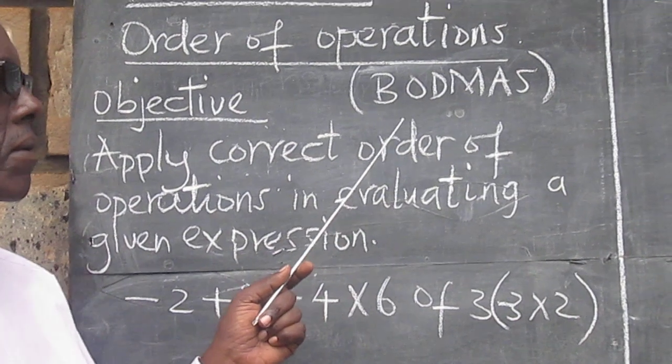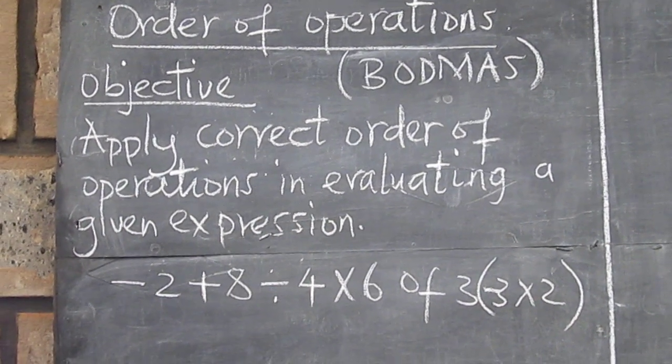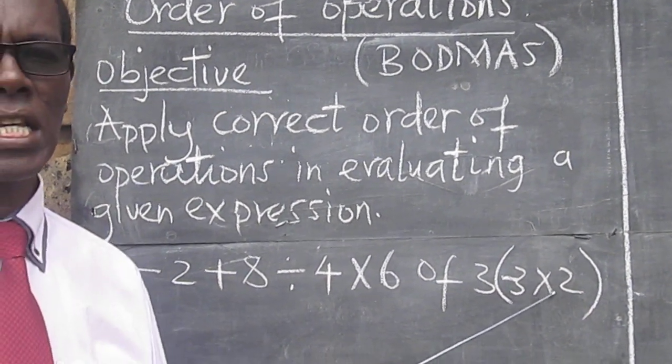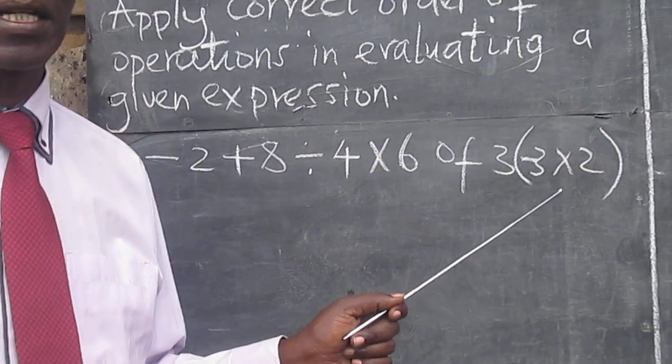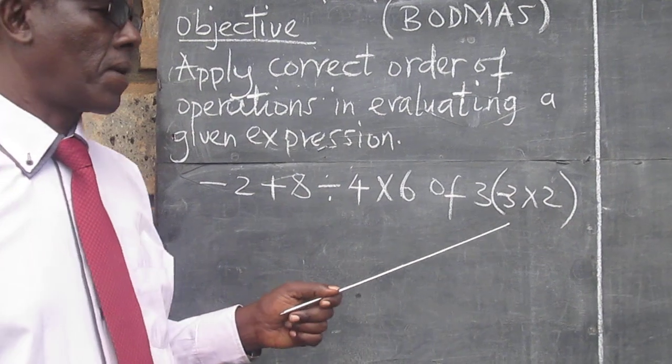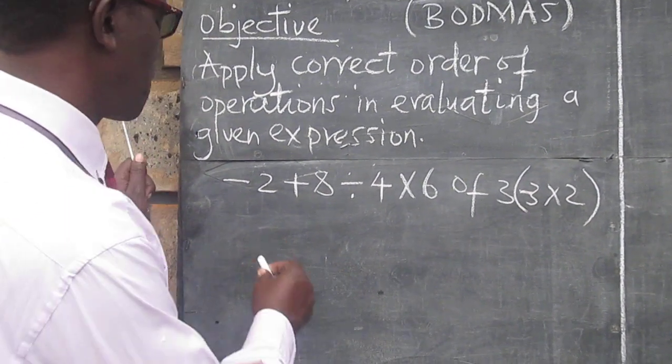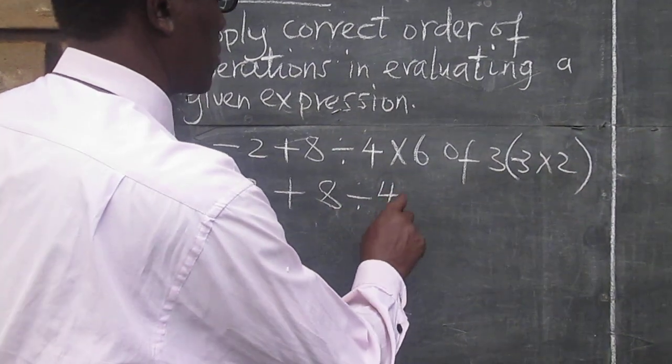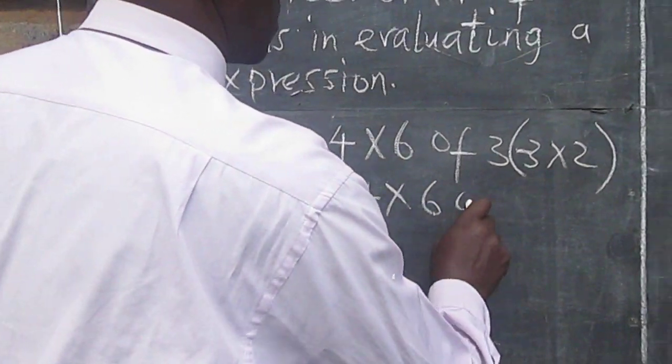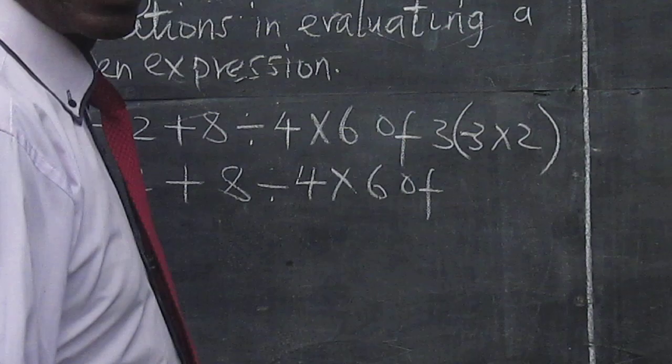So when we move to the order given here, we need to start with the brackets. And so we move straight here. We simplify the bracket. So we will move to -2 + 8 ÷ 4. Inside the bracket.